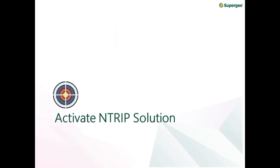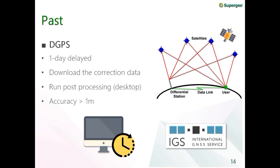Let's look at the first part: activating the NTRIP solution. In the past, we mostly used DGPS to collect data, with accuracy close to 1 meter. The disadvantage is that you can't get a precision location at that moment — you need to wait a day to download correction data from the IGS website, then transfer it to a computer running post-processing software. Also, you needed at least two software applications and two platforms to collect data.